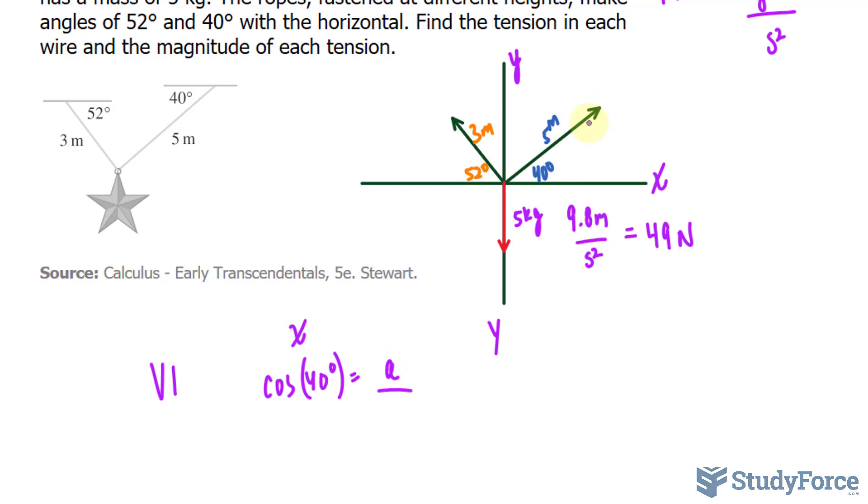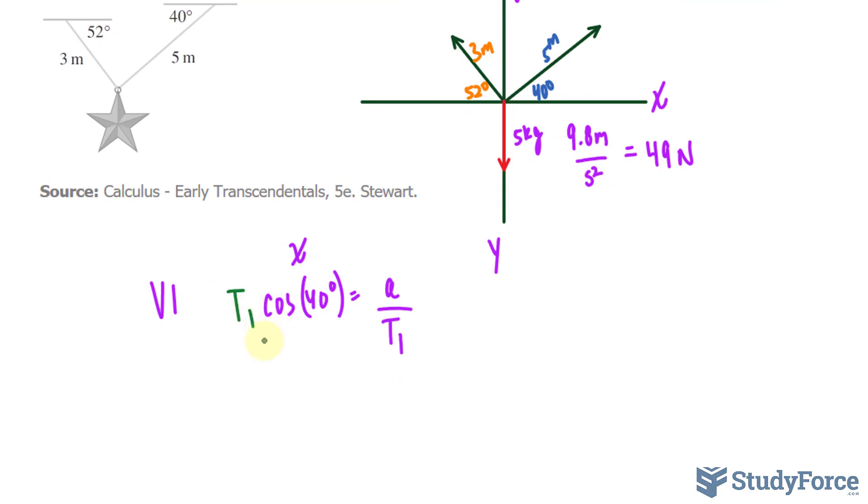Now rearranging for the x component, multiply both sides by T1, and we end up with T1 times cosine 40 degrees is equal to a without this denominator.